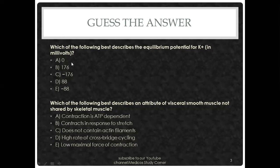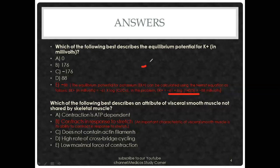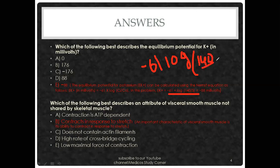The options are 0, 176, minus 176, 88, or minus 88. We apply the Nernst equation: minus 61 log of outside over inside concentration. The potassium values are 140 outside and 5 inside, giving us minus 61 log of 140 over 5, which equals minus 88 millivolts. So the answer is minus 88.